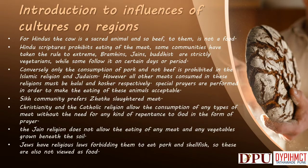For Hindus the cow is a sacred animal and so beef, to them, is not a food — Hindu scriptures prohibit eating of the meat. Some communities have taken the rule to the extreme: Brahmins, Jains, Buddhists are strictly vegetarians, while some follow it only on certain days or periods. Conversely, only the consumption of pork and not beef is prohibited in the Islamic religion and Judaism. However, all other meats consumed in these religions must be halal and kosher respectively.